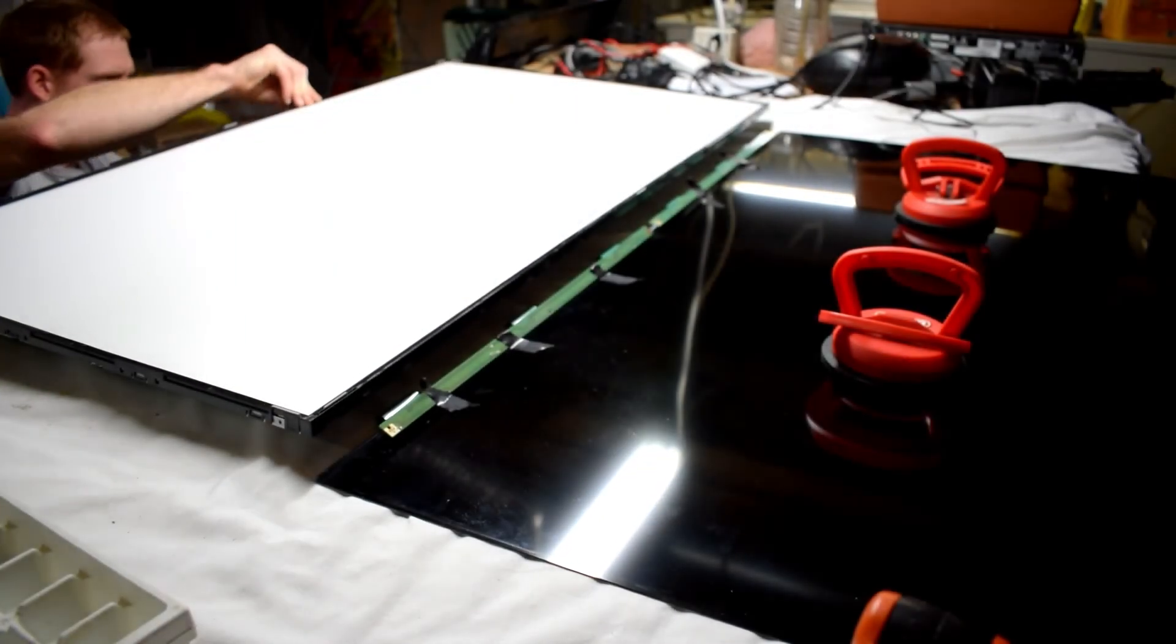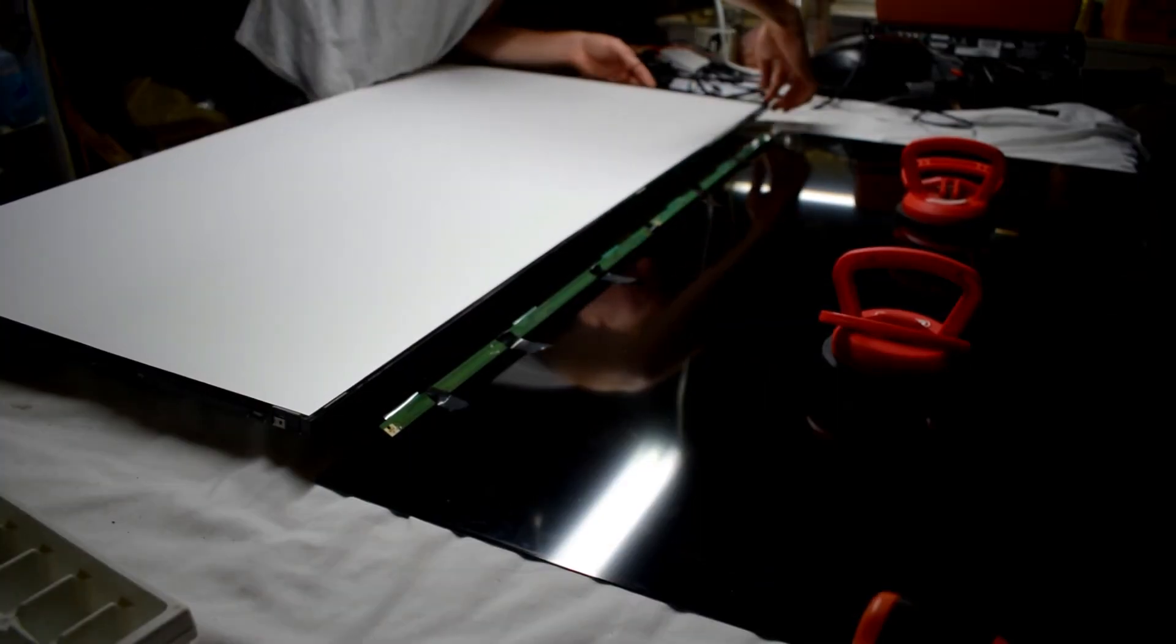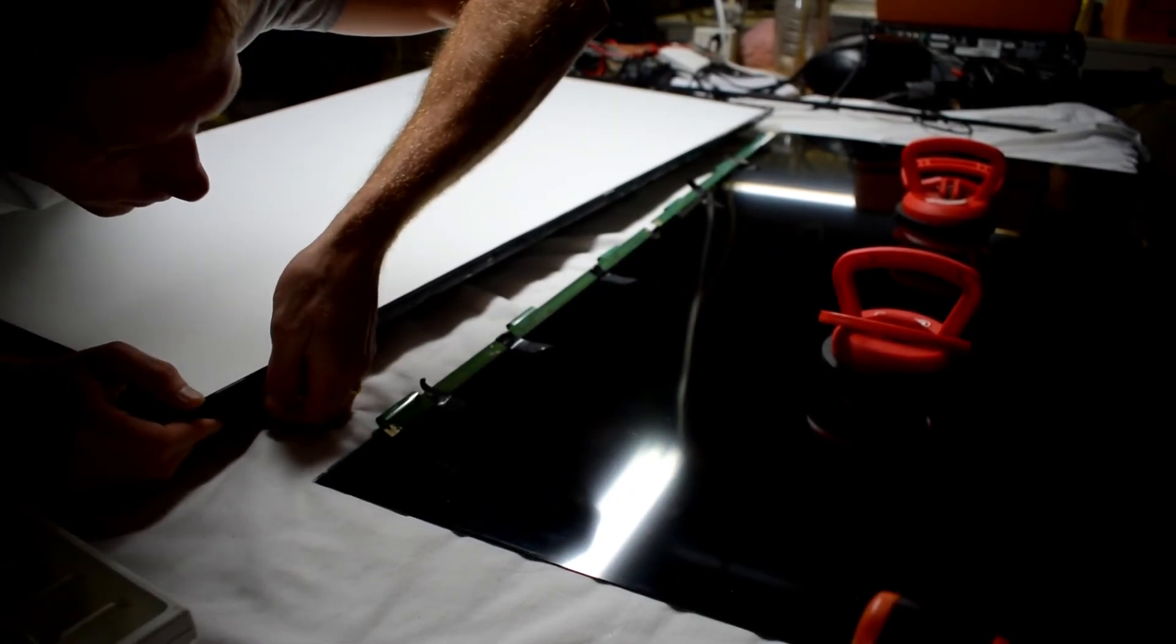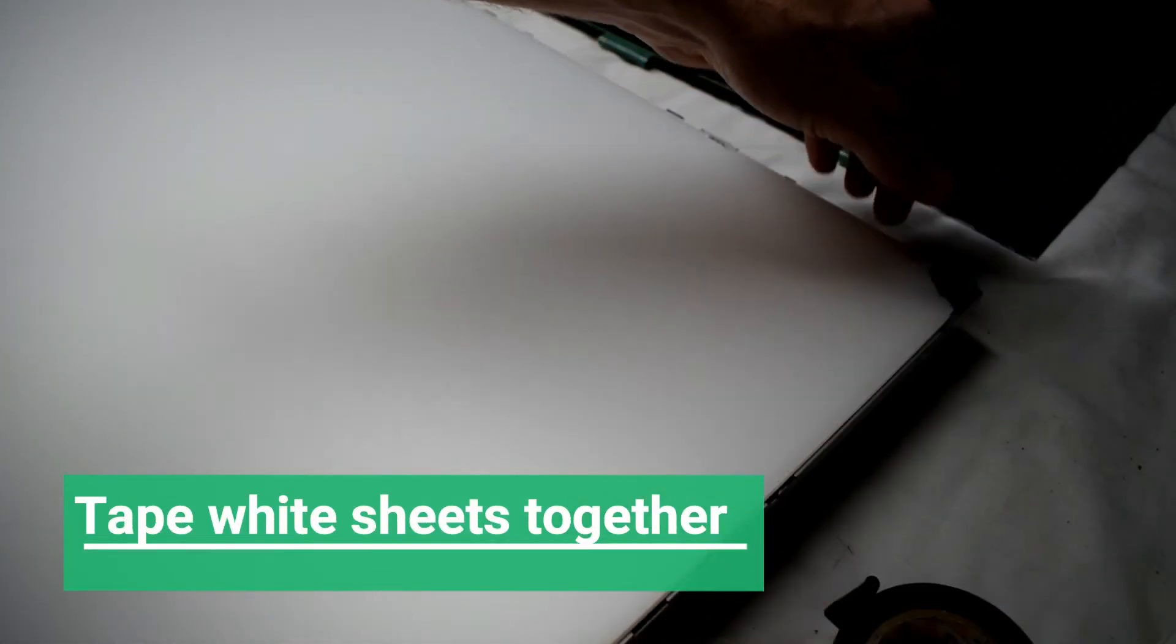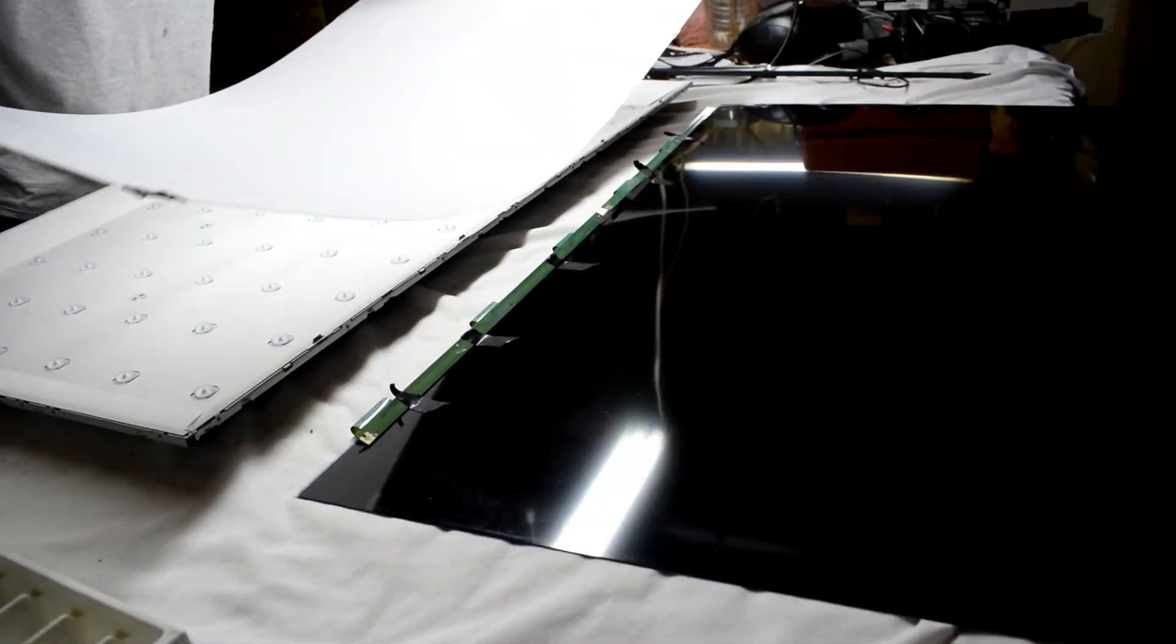Place the screen somewhere safe. Unclip the plastic clips that go around. Remove the little plastic tabs. Tape the white sheets together. I tape all four corners.